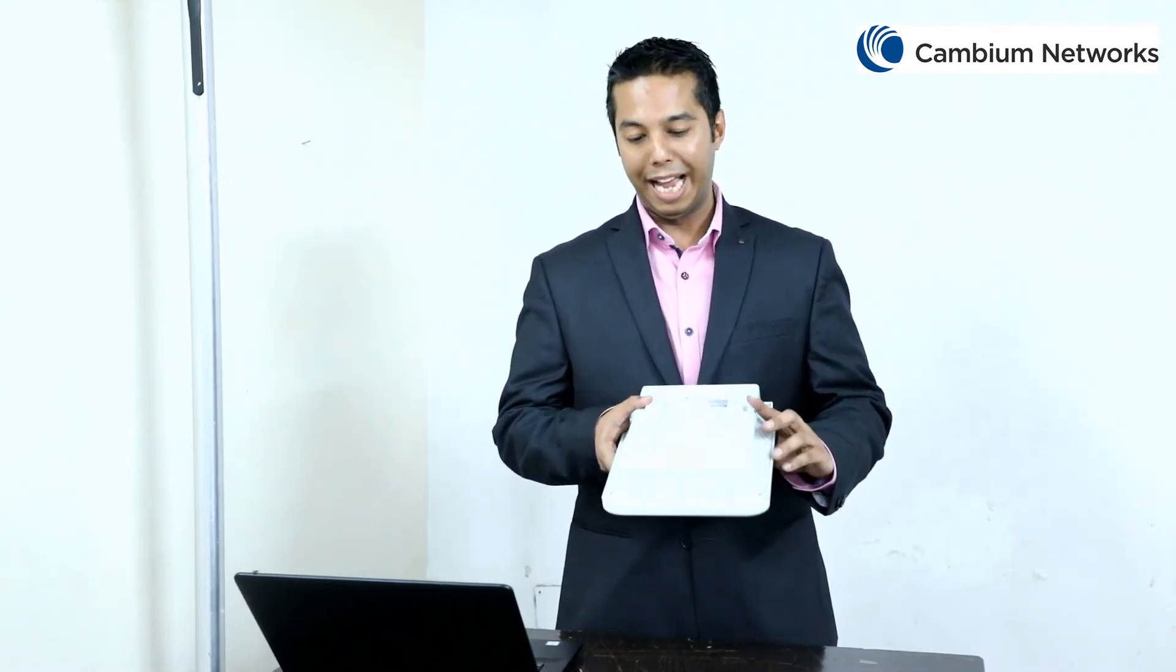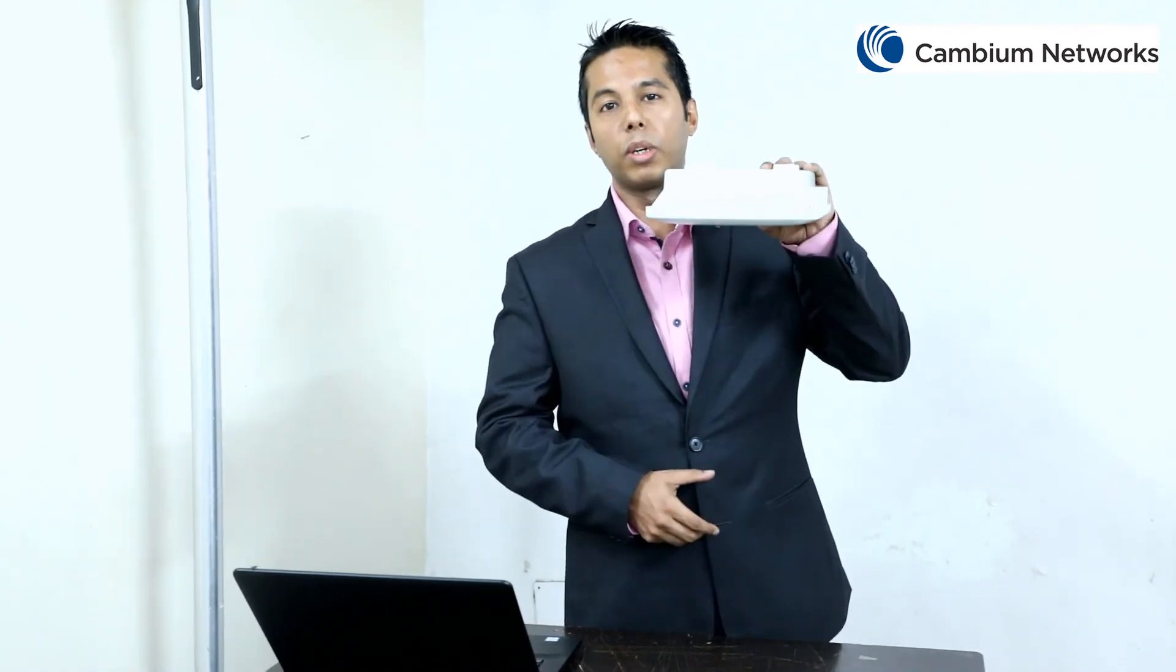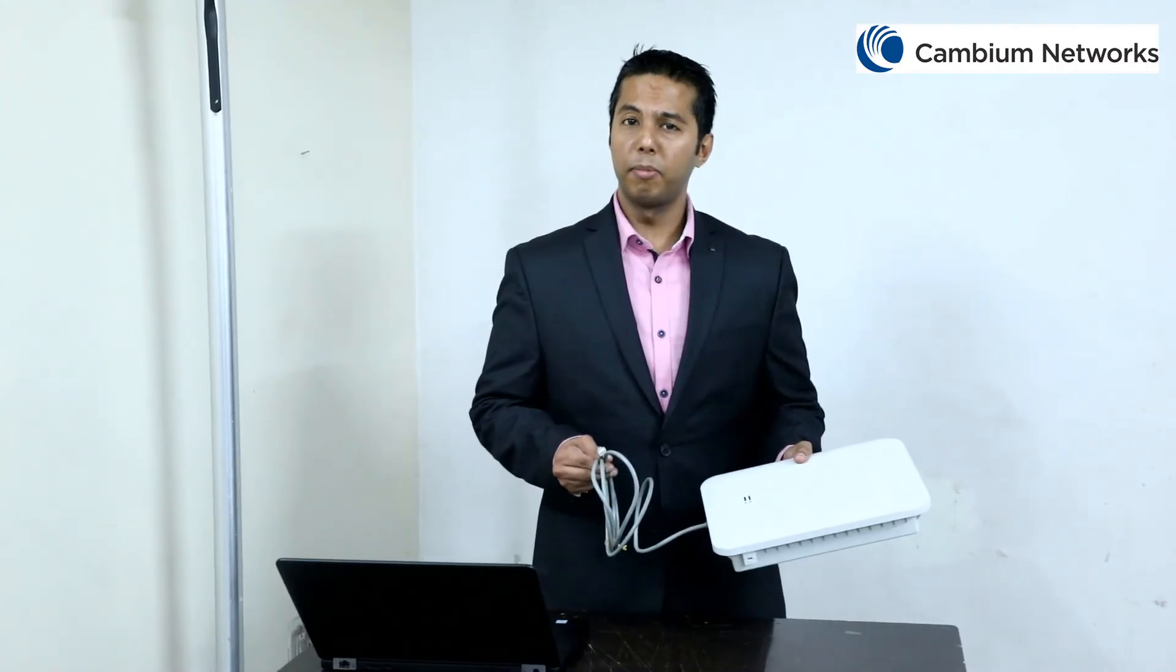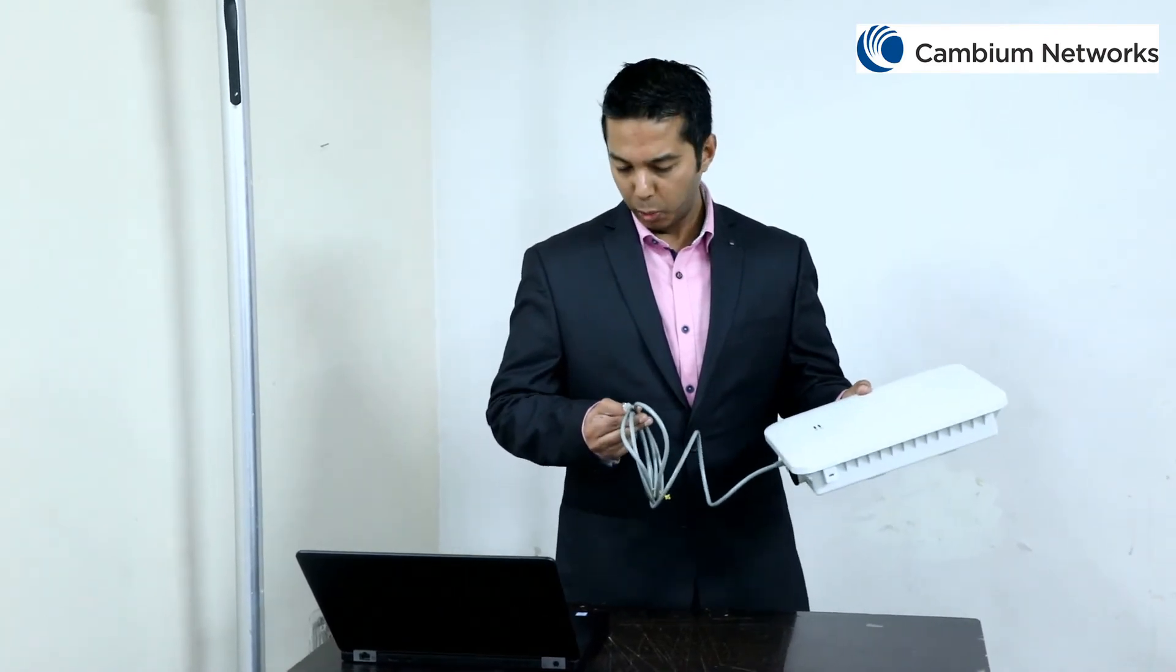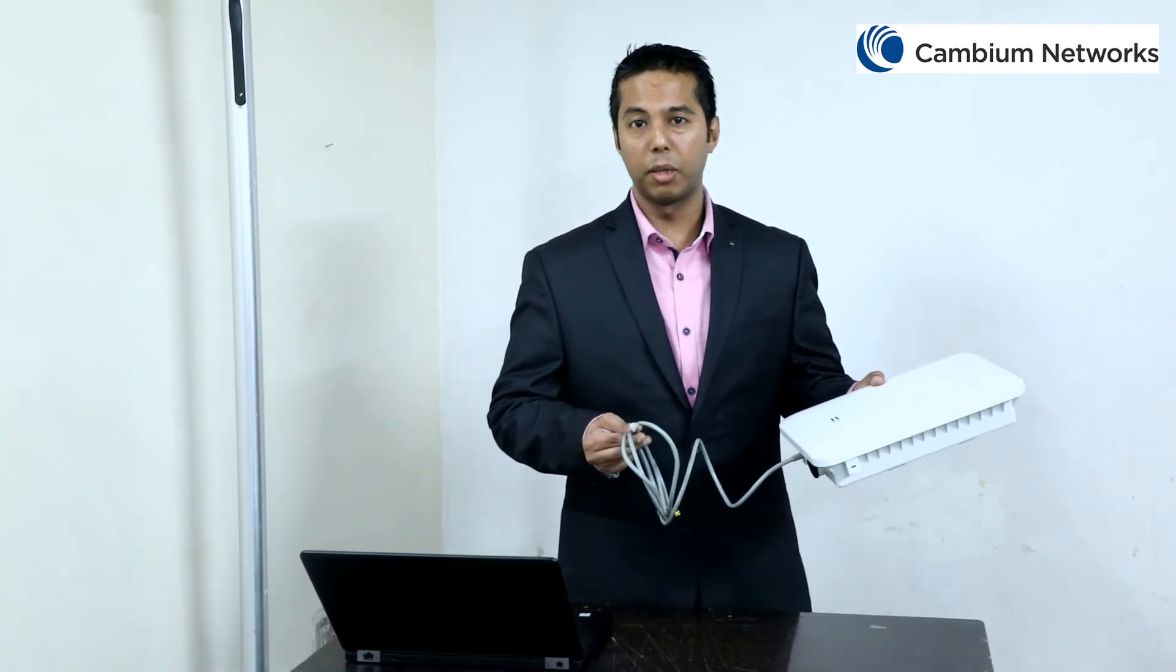Also, if the coverage is needed in the building from top to bottom, please ensure to keep the access point facing downwards like this. The next important point is to avoid the water ingress is by simply looping in the cable like this, going to the PoE port.